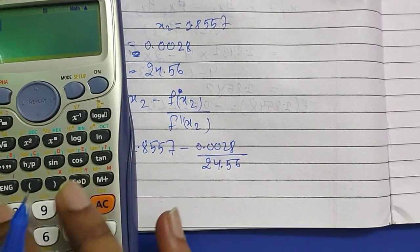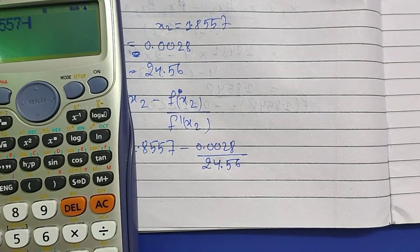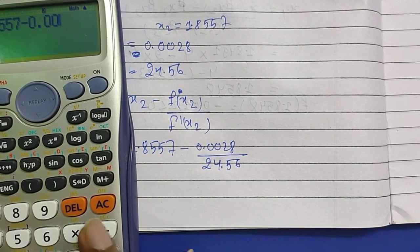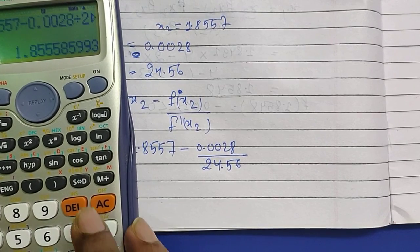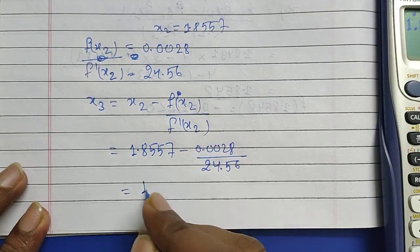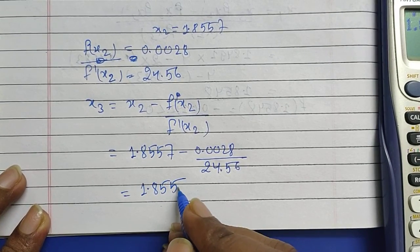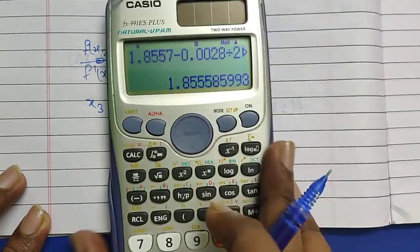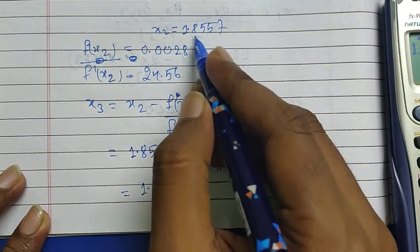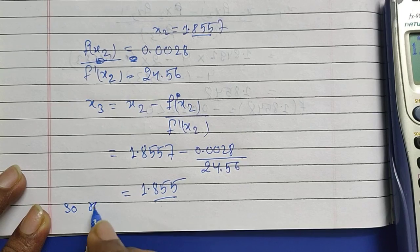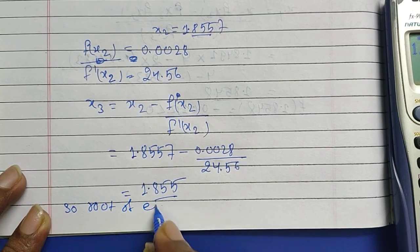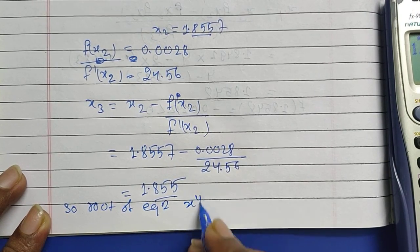Then this is going to be 1.8557 - 0.0028/24.56, and this is going to be 1.8551. As you can see after decimal we are having three terms similar.